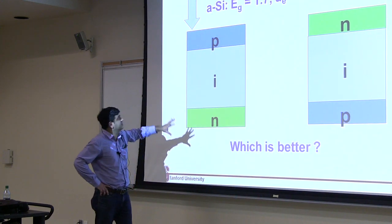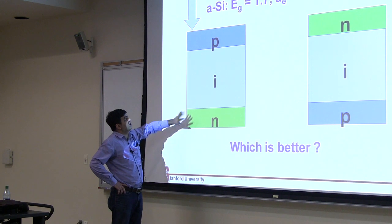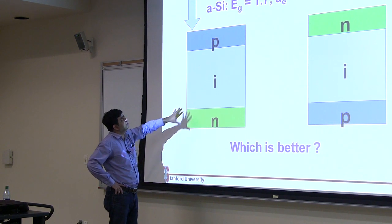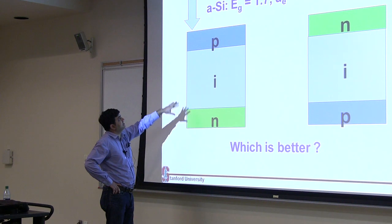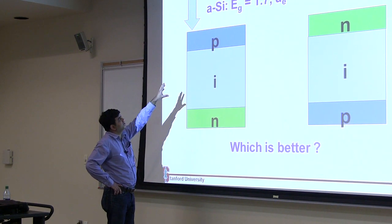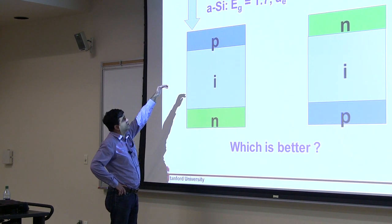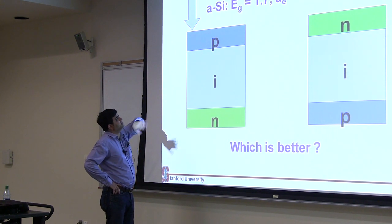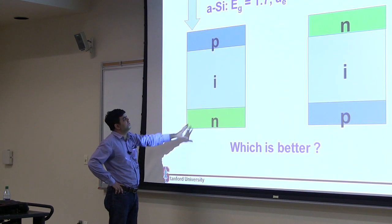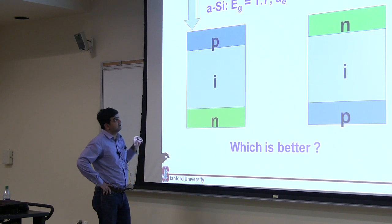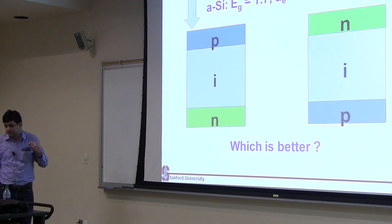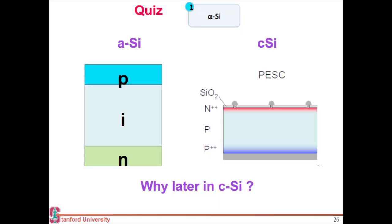So the P-on-top configuration is preferred for amorphous silicon. Typically, most amorphous silicon cells have the P material at the top, because when the carriers are absorbed at the top, you want to collect the holes very quickly and let the electrons use their higher mobility to travel down and then get collected. So this is counter-intuitive compared to what we saw in crystalline silicon — amorphous silicon is mostly configured with P on top.